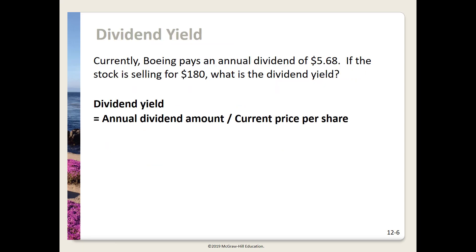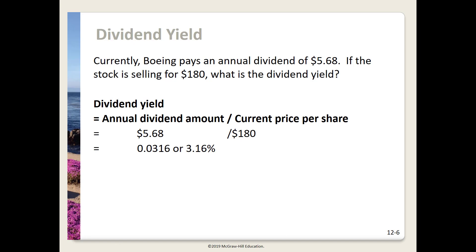Let's look at dividend yields. Currently Boeing pays an annual dividend of $5.68. If the stock is selling for $180, what is the dividend yield? Here's our formula: we take the annual dividend amount and divide it by the current price per share. Taking $5.68 divided by $180, we get a dividend yield of 0.0316, or 3.16%. Recall that to convert decimals into percentages, we move the decimal point two places to the right.